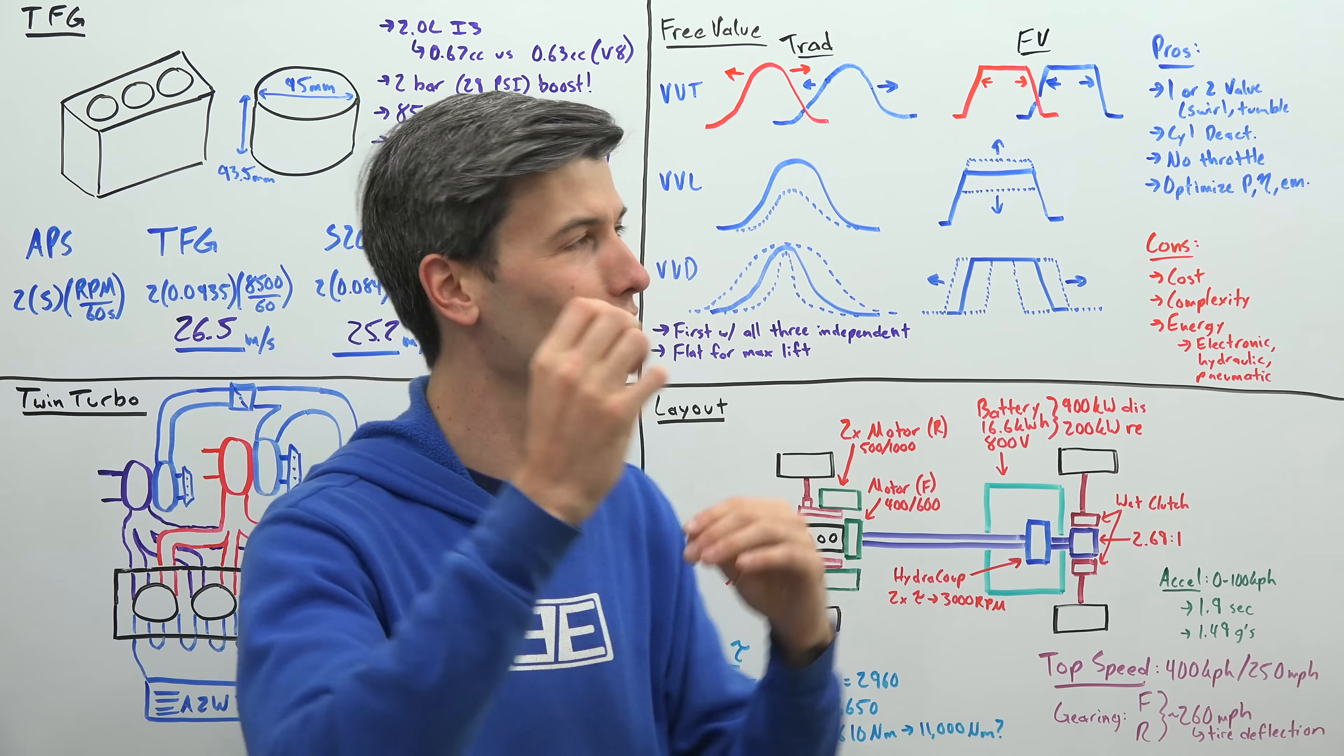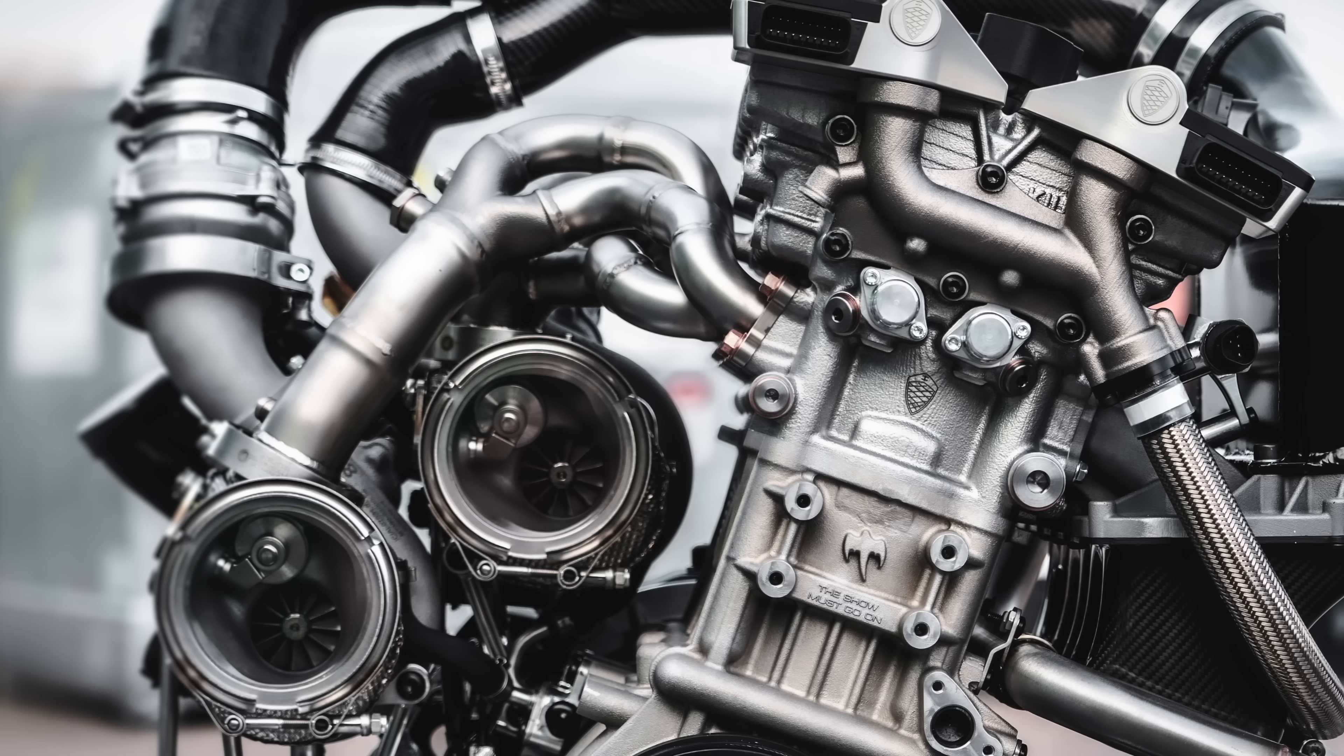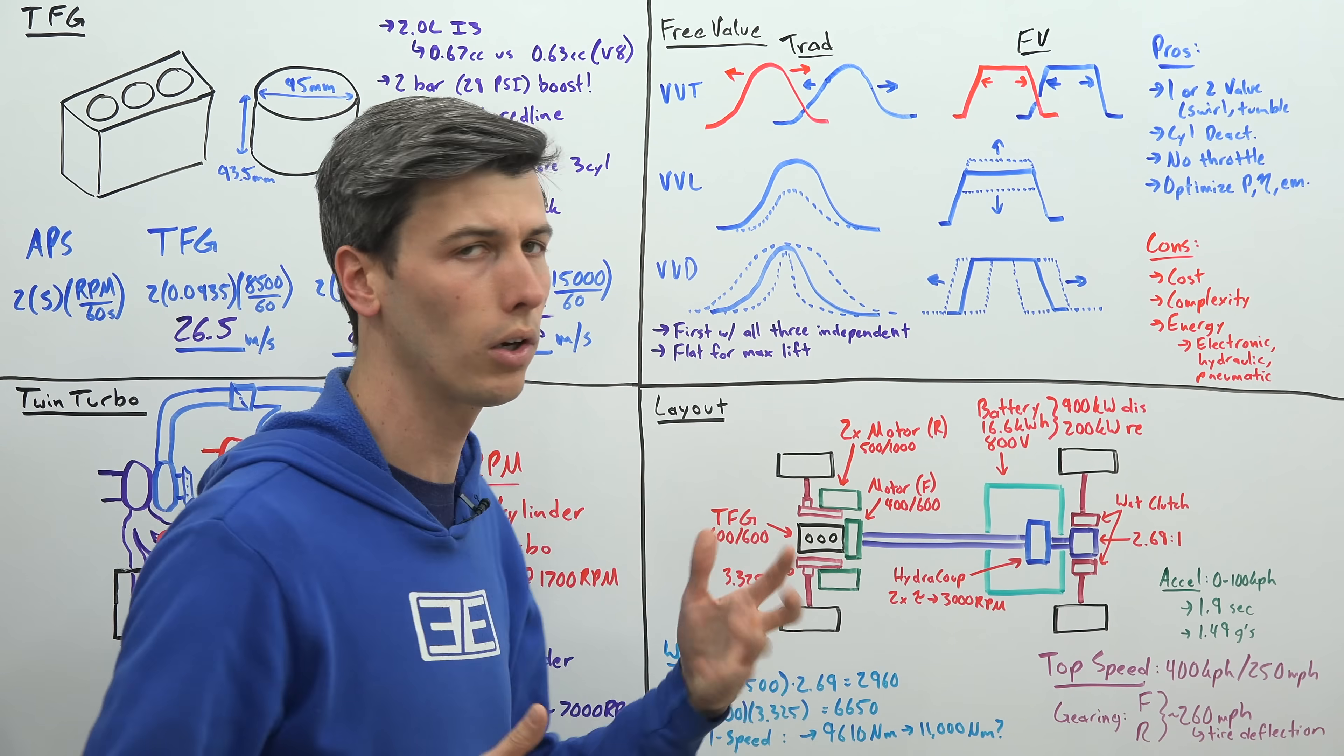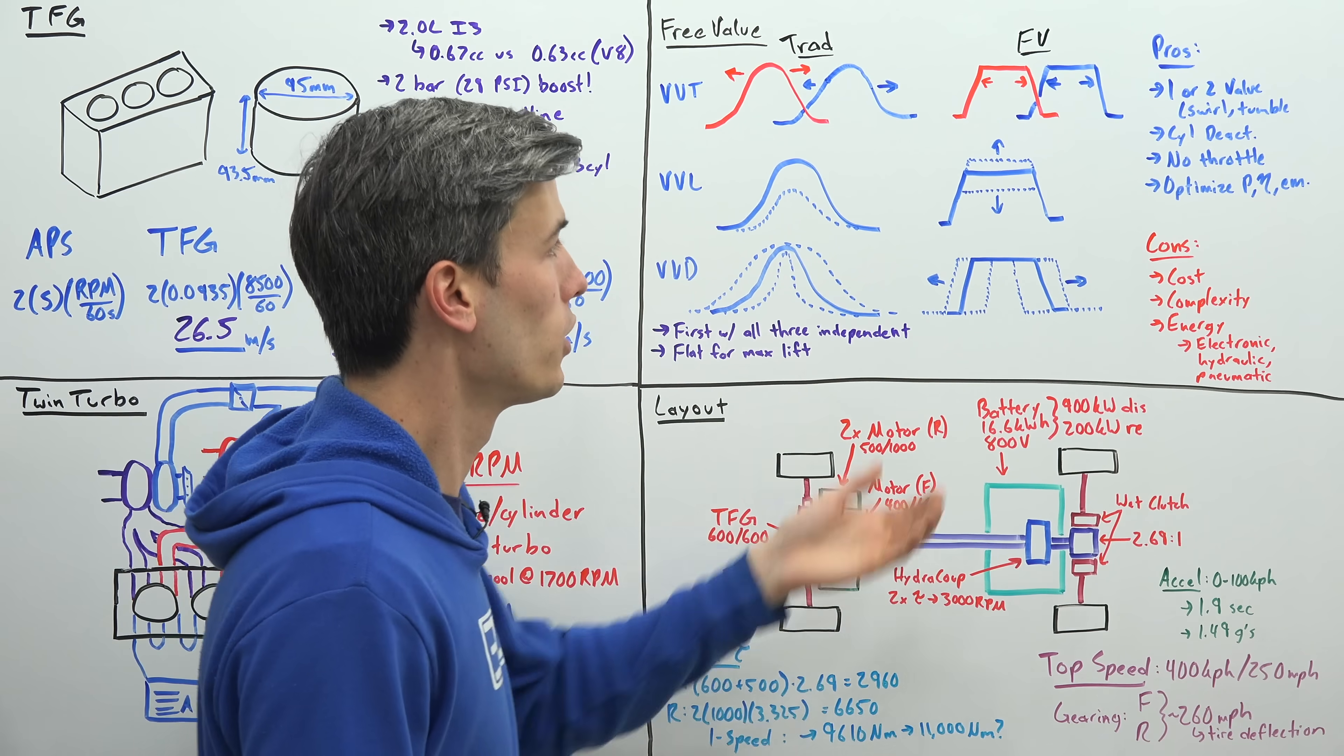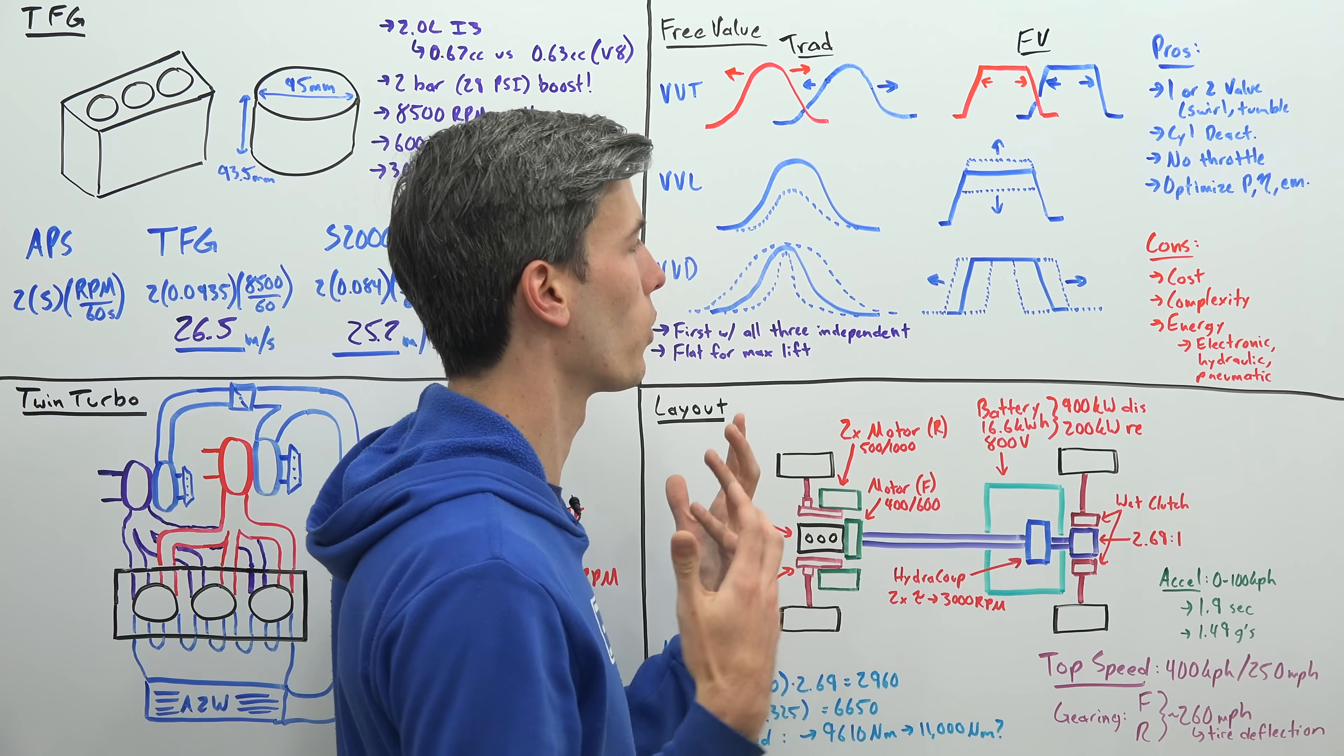And so you can choose any of these points at any given RPM, any given load, what you're going for, whether it's efficiency, or whether it's power, or whether it's emissions. You can optimize all three of these among other parameters and choose the best spot for whatever you're targeting. So you have an immense amount of flexibility with this engine. Some other advantages you can choose between just using one or two valves to open up. So you could just have one intake valve open and create some swirl or some tumble within that cylinder. You could choose to have both for better airflow. You can implement cylinder deactivation really easily, because all you do is you just don't open the valves. You don't need a throttle with this engine. You can use valve lift in order to throttle the engine for low loads or high loads, and so that improves efficiency. And again, just having all of this control means that you can optimize for whatever you're looking for.